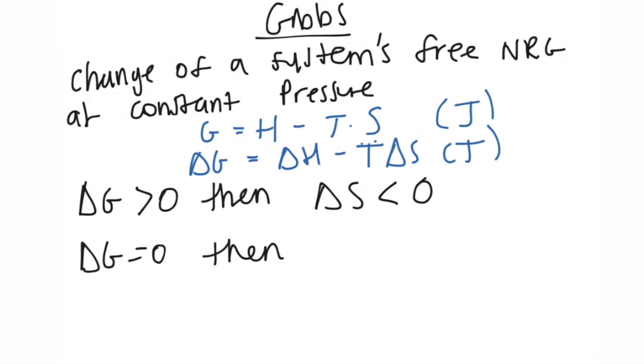And you guys are going to see the proof in class. I'm not going to go over it in my video, because you will see that in class and it's pretty straightforward. But yeah, when the change in Gibbs is greater than zero, our change in entropy is less than zero. And the opposite is true. So if the Gibbs is less than zero, then our change in entropy will be greater than zero. And if our change in Gibbs is zero, then our change in entropy is equal to zero.